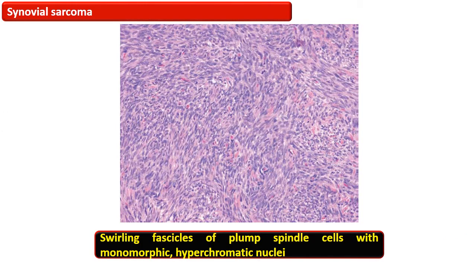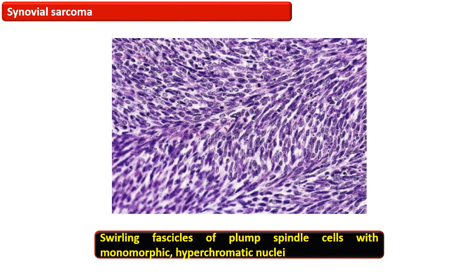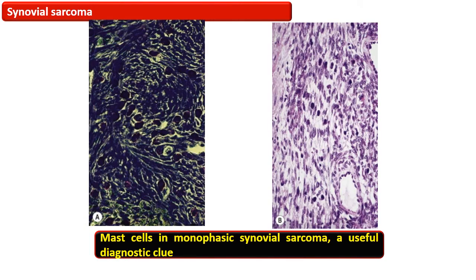This photomicrograph shows the school-of-fish appearance of the monophasic pattern of synovial sarcoma, with swirling fascicles of plump spindle-shaped cells with monomorphic hyperchromatic nuclei. The high-power view more clearly shows the swirling fascicles of plump spindle cells. The presence of mast cells in monophasic synovial sarcoma is an important diagnostic clue, and these are stained by toluidine blue.